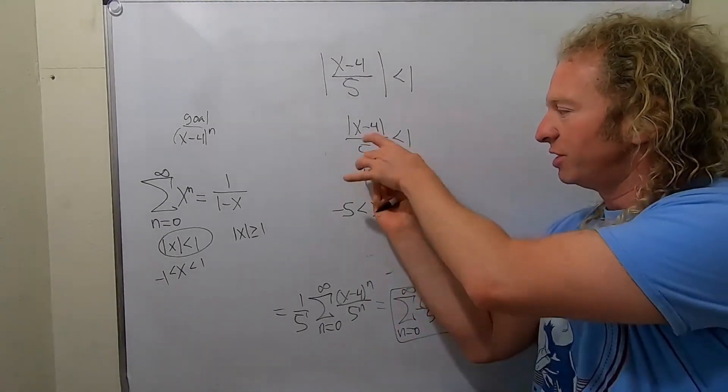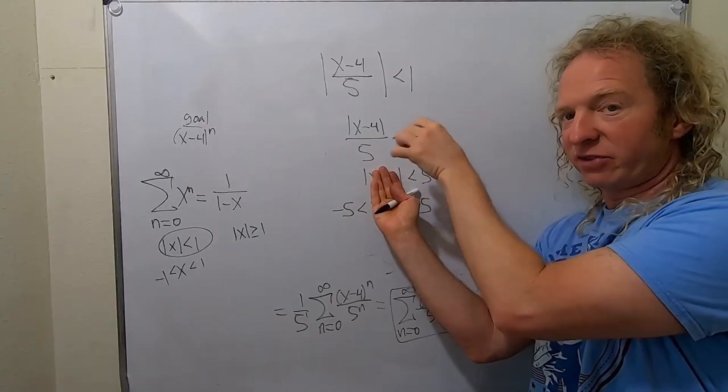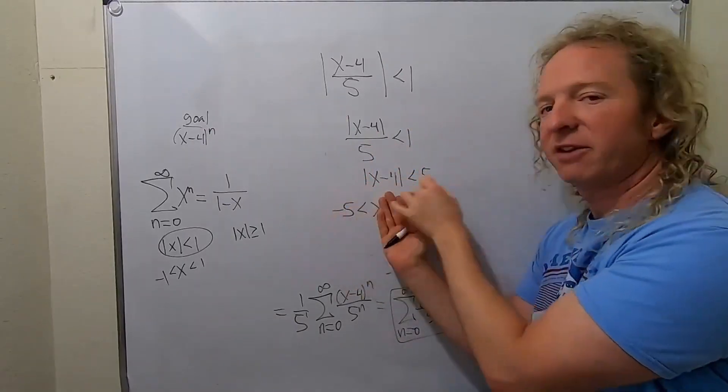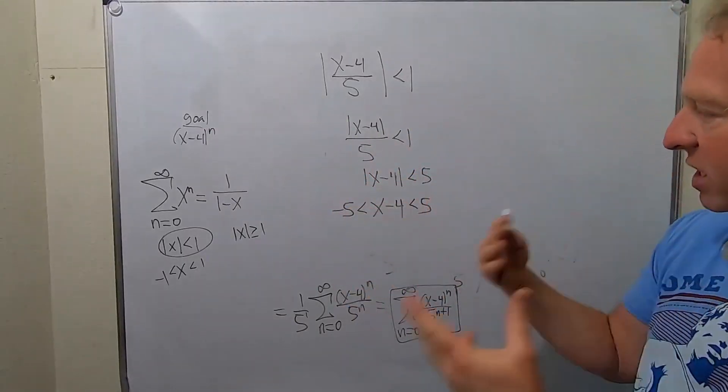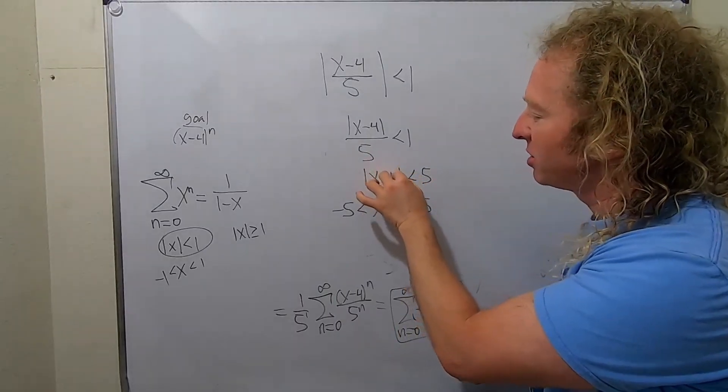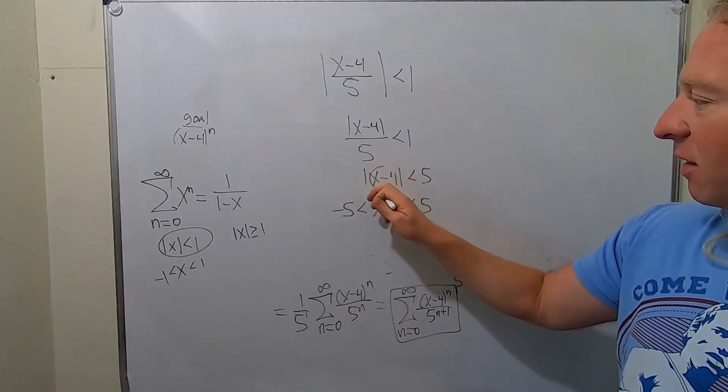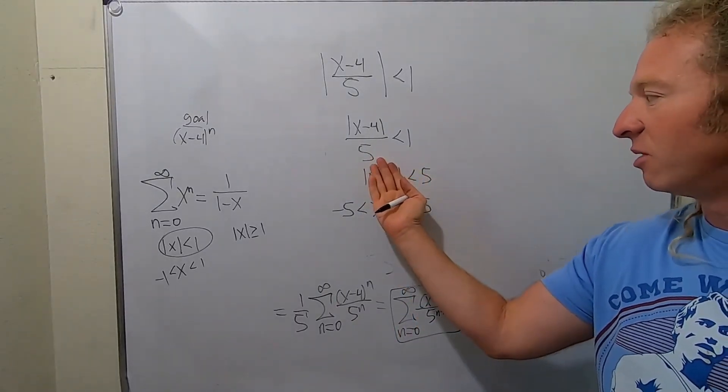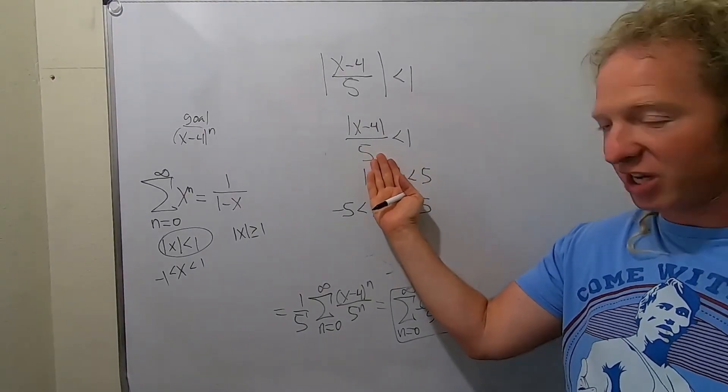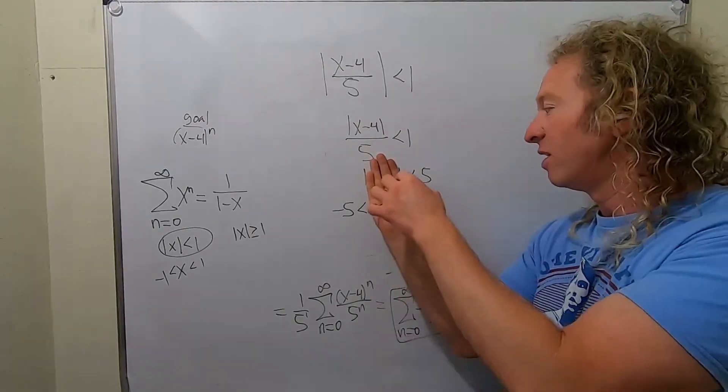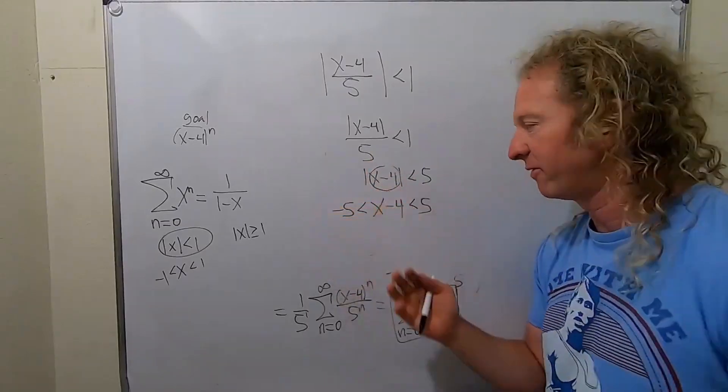So this is a number whose distance from 0 is less than 5. So this number must be between negative 5 and 5. That's the reason, right? Because the absolute value is distance. The distance of this between 0 and this is less than 5. So this is a number whose distance from 0 is less than 5. So it's trapped between negative 5 and 5.